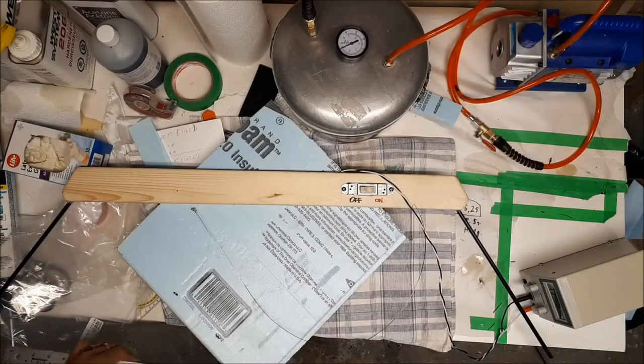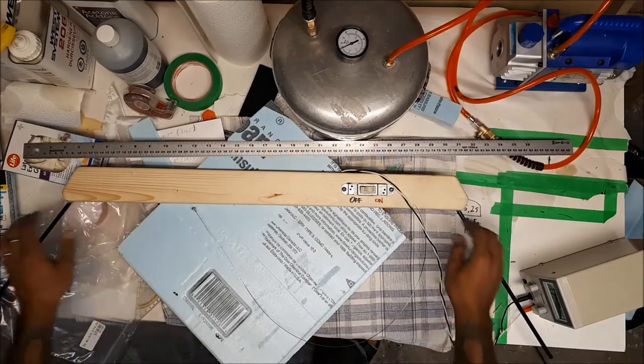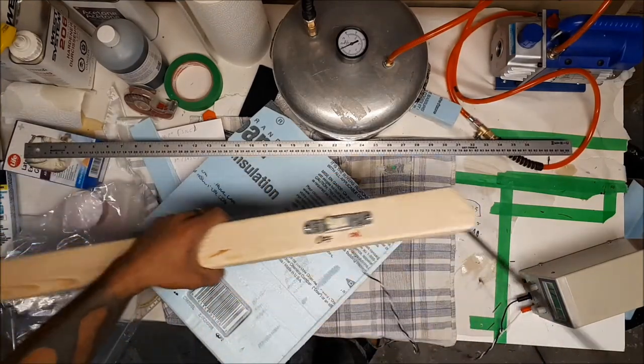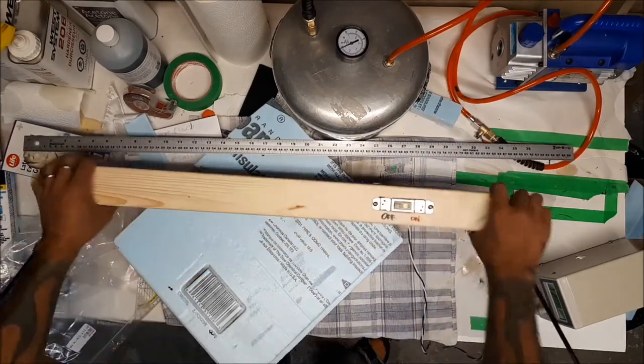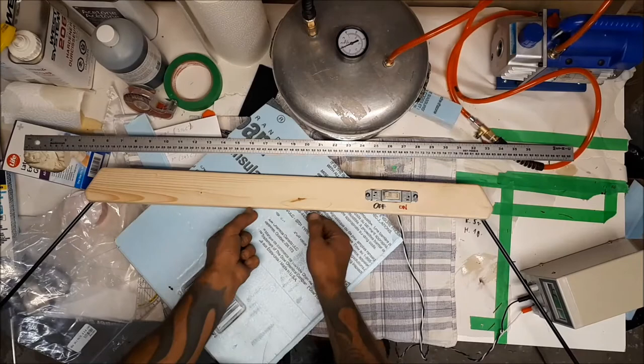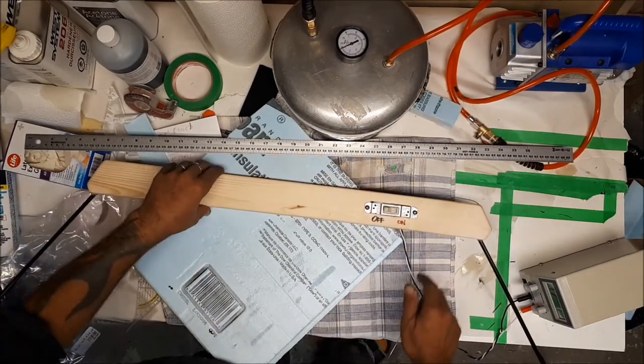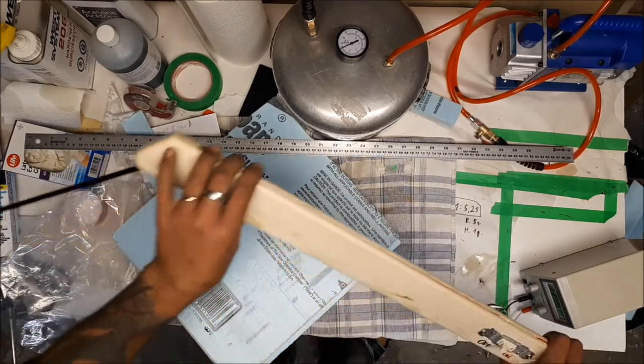Ahoy fellow DIYers, on today's menu it's the hot wire bow for my foam cutting projects. This is the 3x1 imperial plank, got the router, the wire in fiberglass rods.